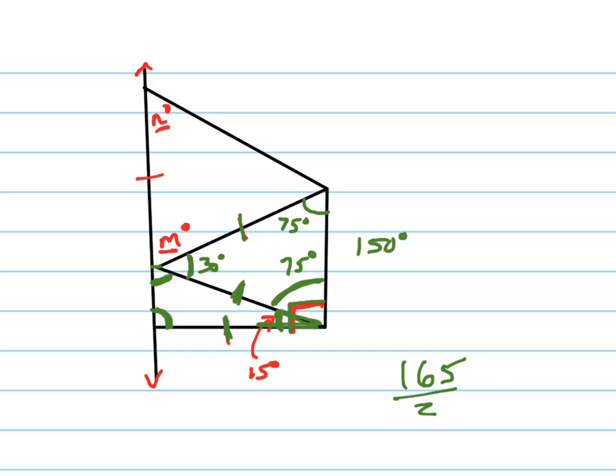Half of 160 is 80. Half of 5 is 2.5, so that's 82.5. So that's what this angle is right here, 82.5. Uh-oh, what's 82.5 plus 30? It's 112.5. So that's this angle. So what's M going to be?